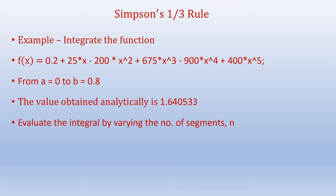We can now do an example using Simpson's one-third rule. We would like to integrate the function f(x) as represented here. The limits are from x equals a to x equals b, where a equals 0 and b equals 0.8. The value obtained analytically is equal to 1.640533. We'll apply Simpson's one-third rule and do the numerical integration and obtain results. We can compare the results and vary the number of segments and see how the program behaves.